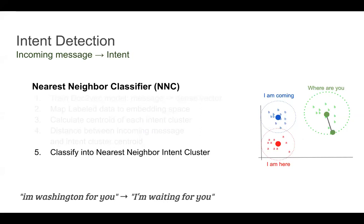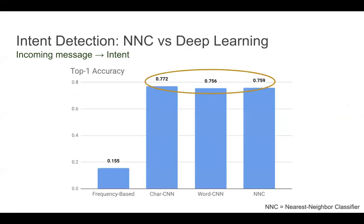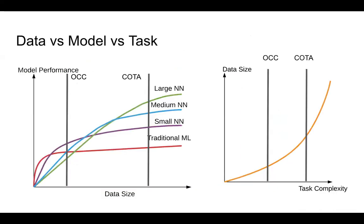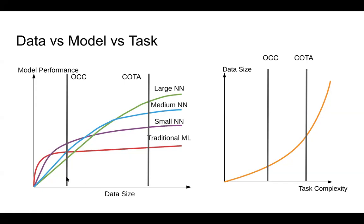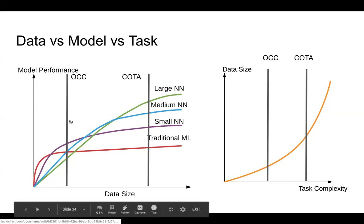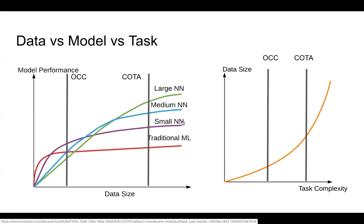It turns out that works amazingly well — 'I'm Washington for you' can be correctly classified as 'I'm waiting for you.' We also tried deep learning, and it turned out the deep learning model doesn't have an advantage over the nearest neighbor classifier. The reason is we started simple — we collected only thousands of labeled data, and that's good enough for accuracy. At that point, deep learning is not showing advantage yet because we're not in the regime of big data. This is the lesson from the second use case: we have a relatively simple task and limited labeled data, so we're not in the regime where deep learning shows its power. Deep learning performed on par with traditional ML models, but the performance was good enough, so we pursued that route.